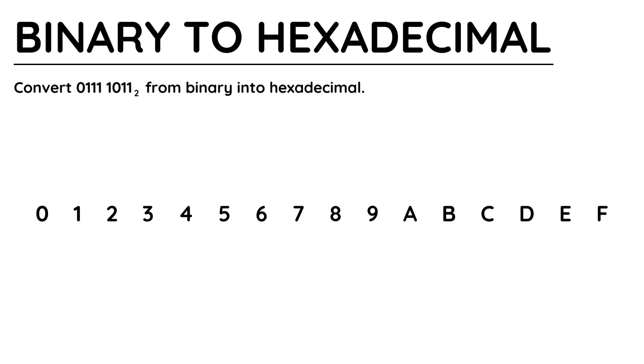Hexadecimal is a base 16 number system, meaning it uses 16 different values. Hexadecimal uses 0 to 9, just like the denary system, and then A to F.